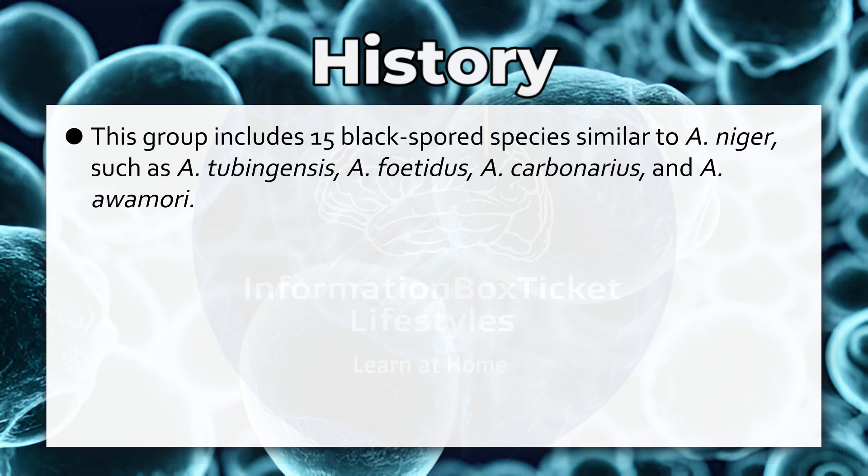This group includes 15 black-spored species similar to Aspergillus niger, such as Aspergillus tubingensis, Aspergillus foetidus, Aspergillus carbonarius, and Aspergillus awamori.